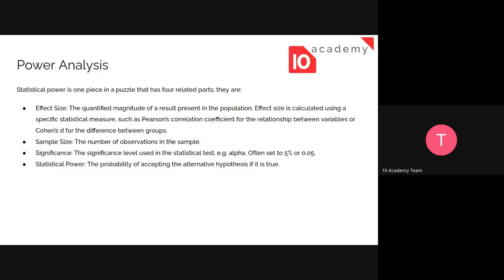The sample size is the number of observations in the sample. The significance is the number — the alpha or critical point — that we use while trying to reject or agree with the null hypothesis. We use the significance label from the statistical test, and that critical point determines whether we reject or accept the null hypothesis. And there's the statistical power, which is the whole power analysis we've been talking about.